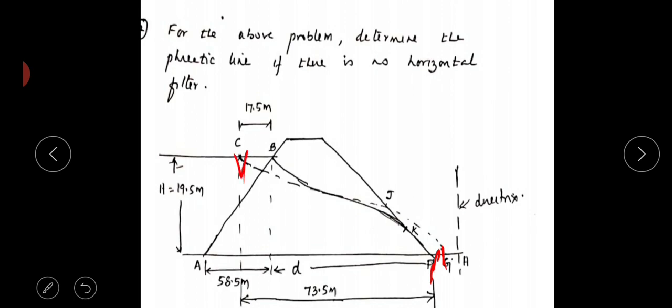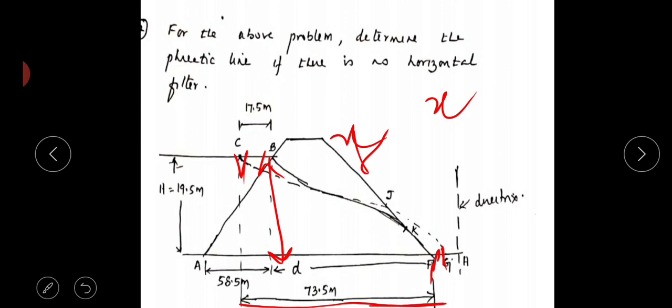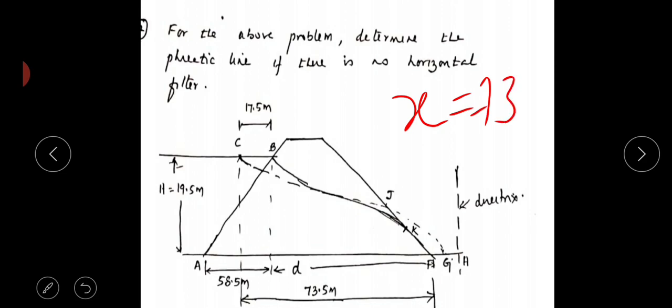You have the height of the phreatic line, that is y-axis, and x-axis. The x-axis here, overall this distance, is 73.5 meters and the y-axis will be 19.5 meters. That is the height of this distance and we have to plot the phreatic line for the complete line.